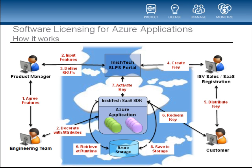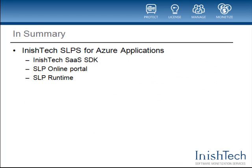The application then receives a license blob, which is installed and stored to Azure Blob Storage. At runtime, the application uses the InishTech SaaS SDK to load licenses and to make entitlement decisions for the customer. The InishTech service as described consists of three components: the InishTech SaaS SDK, the SLP online portal, and the SLP runtime. They combine to form the most comprehensive, advanced solution for licensing and monetization of your Azure applications.